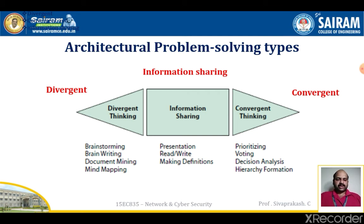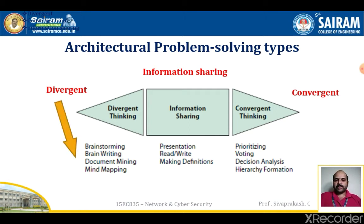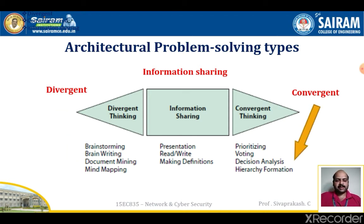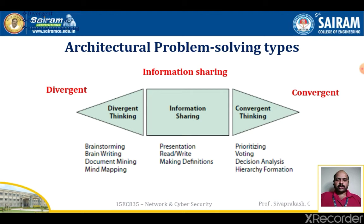The primary modes of thinking in architecture problem solving patterns are divergent thinking, convergent thinking, and information sharing. Divergent thinking includes brainstorming, brainwriting, document mining, and mind mapping. Convergent thinking is used for prioritizing work, selection of particular tasks, decision analysis, and hierarchy formation. Information sharing involves presentations, read/write operations, and making definitions.